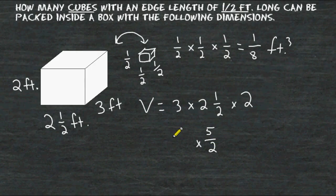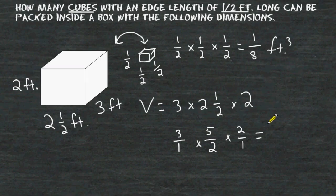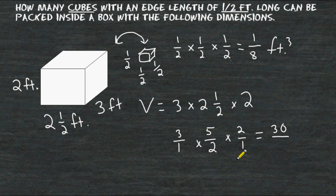Change any whole numbers into a fraction by simply writing the number one as its denominator. Now we may multiply all of our numerators together. Three times five is fifteen, and fifteen times two is equal to thirty. For our denominator we have one times two which is two, and two times one which is also two. Next we simplify our improper fraction by taking thirty and dividing that by two, which equals fifteen.